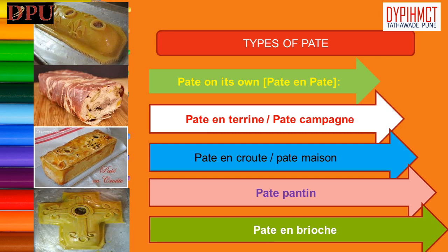Pâté en croûte or pâté maison: Force meat baked in a crust. The force meat can be country style, basic, or mousseline, but basic force meat is most commonly used. A pâté mold helps to produce a more attractive finished product. Pâté pan — a variety of pâté en croûte, rectangular or oblong in shape, which is not cooked in a mold. The filling is placed in the center of the pastry, the edges are folded over and sealed, then baked until done. It can be served hot or cold.